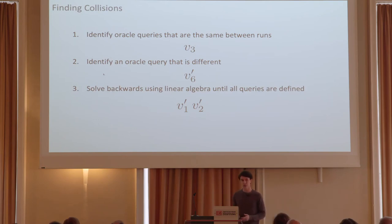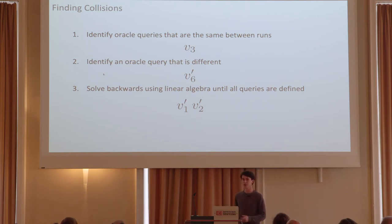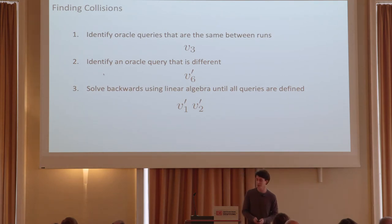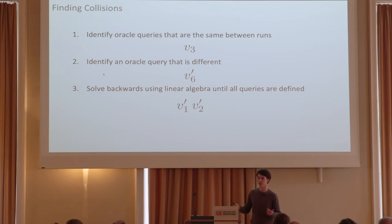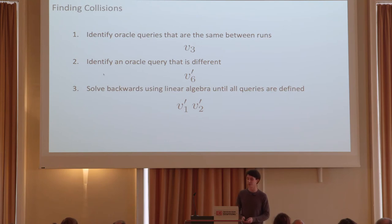Here is the general outline of the recipe we followed: we identified a set of oracle queries that were the same between both runs; we identified a special oracle query that was different between the runs; then using that information we solved backwards for all internal queries and, incidentally, all input vectors — which, like oracle queries, can determine the entire system.